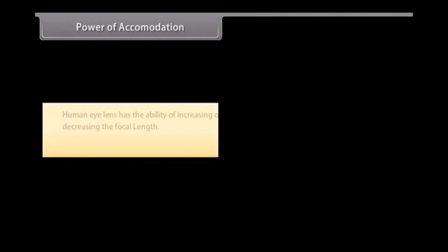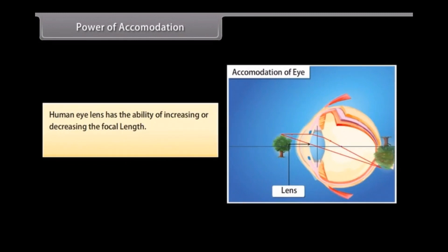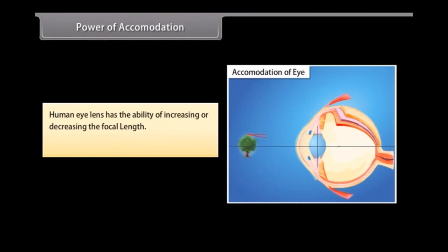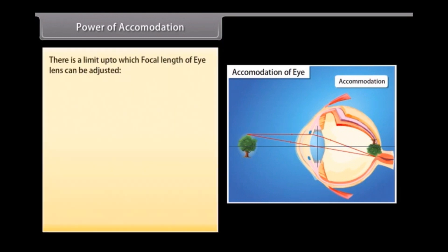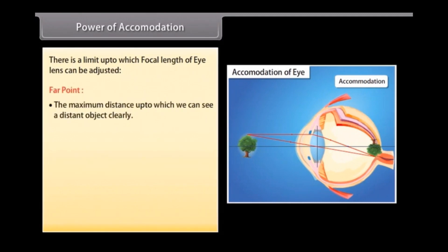The human eye lens has the ability of increasing or decreasing its focal length — this is known as accommodation. Accommodation is achieved with the help of ciliary muscles. There is a limit to which the focal length of the lens can be adjusted. The far point is the maximum distance up to which we can see a distant object clearly.